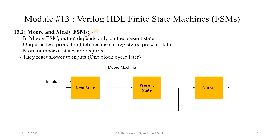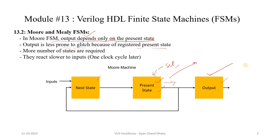In the Moore Finite State Machine, there are basically three logic blocks: the next state logic, the present state logic, and the output logic. In Moore FSM, the output depends only on the present state, so the output is less prone to glitches because of the registered present state. The present state logic is a sequential circuit, meaning its output is synchronous with respect to the clock. The number of states required to implement a Moore FSM is comparatively more than a Mealy FSM.